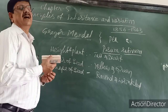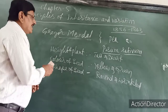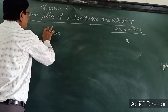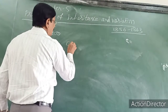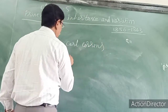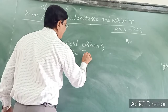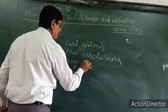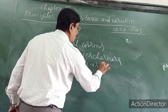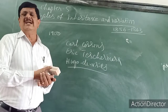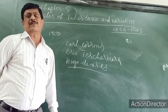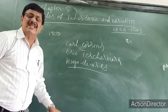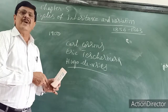He died in 1884. In 1900, three scientists from three different countries — Correns, De Vries, and Tschermak — independently arrived at the same concept. They realized that Mendel had already done this work. So Mendel was considered the Father of Genetics, and these scientists rediscovered the Mendelian principles.